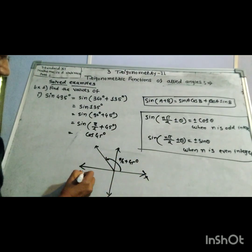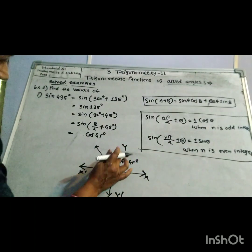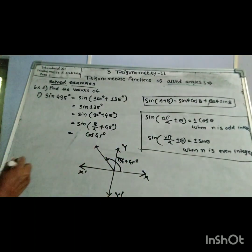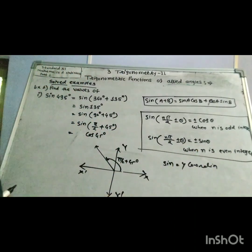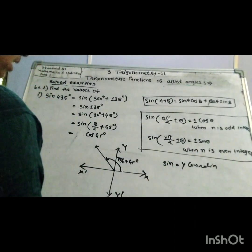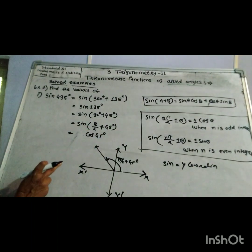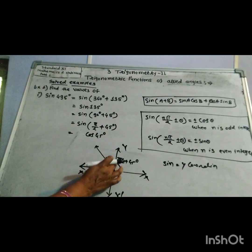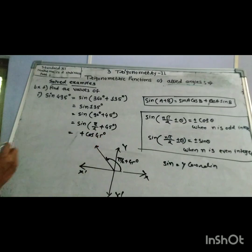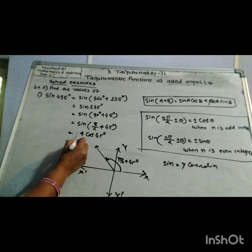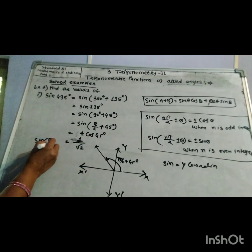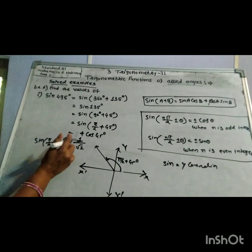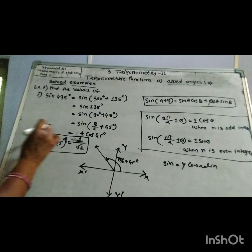By definition, sin(θ) is the y-coordinate and cos(θ) is the x-coordinate of the point on the unit circle. For sin(π/2 + 45°), this angle lies in the second quadrant where y-coordinates are all positive, therefore the result is positive cos(45°). Since cos(45°) = 1/√2, the answer is sin(π/2 + 45°) = 1/√2.